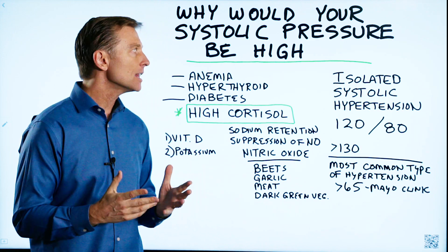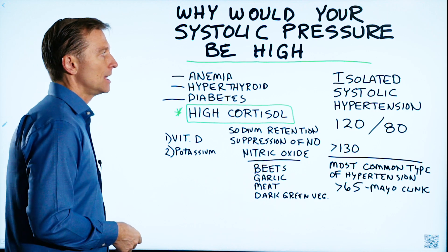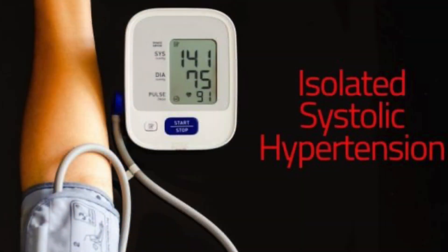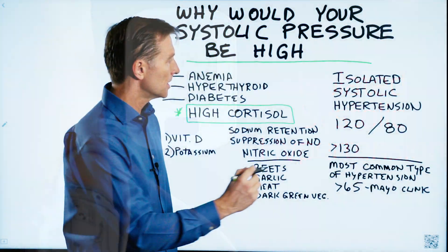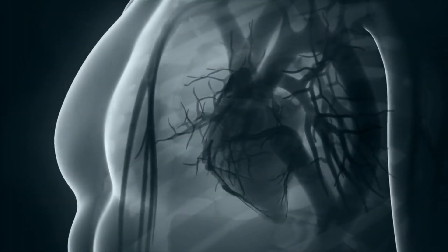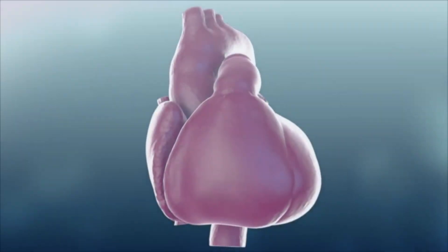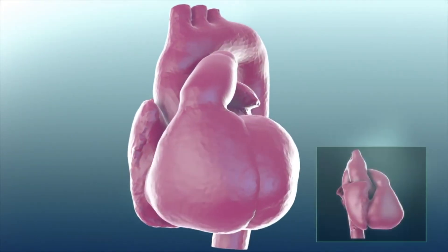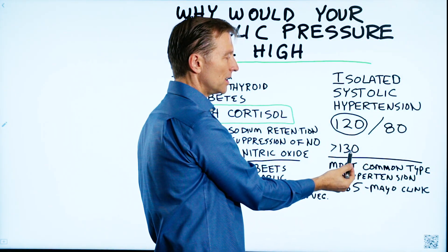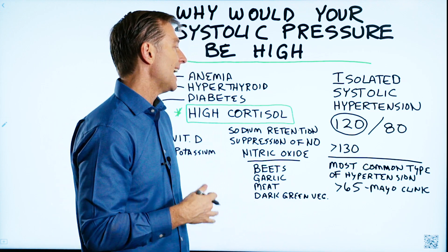Why would your systolic pressure be higher than your diastolic? There's a condition called isolated systolic hypertension. Normally, blood pressure is 120 over 80. The top number is the systolic, which measures the contraction of the heart, and the diastolic is the relaxation phase. This condition is defined as the systolic going above 130, but sometimes you see it really high — like 160 or 180.